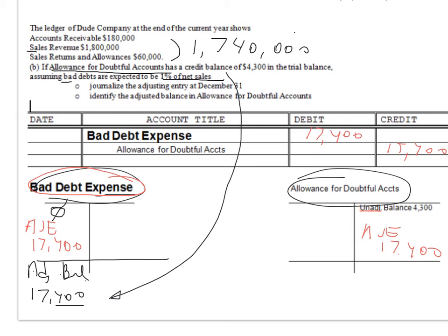So we answered the first question. The second extra question I gave you: identify the adjusted balance in the allowance account. Don't be fooled — even though we didn't really start with the allowance, I might be asking you for the balance in that account. It doesn't mean you jump straight to the allowance; you still do the work the same way as you did because it's a percentage of sales method. But then at the end, the adjusted balance in the allowance account will be the unadjusted balance plus what we just adjusted it for. The total is $21,700 on the credit side. We're done.